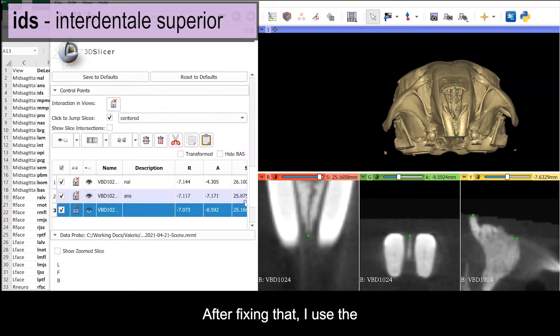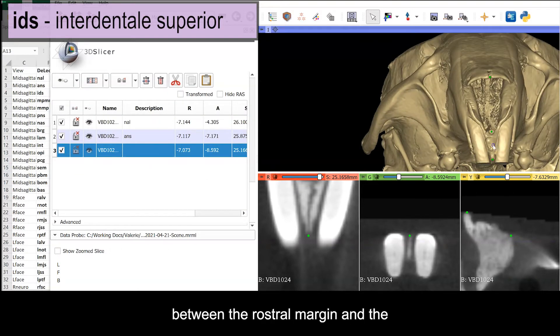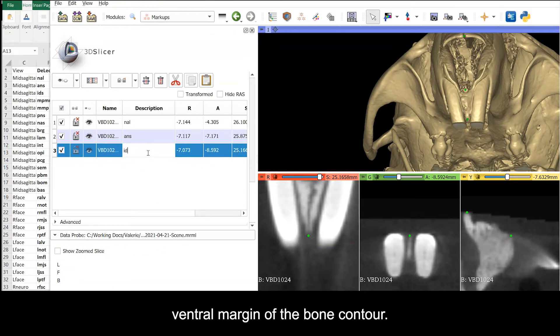After fixing that, I use the sagittal view to confirm the point is at the maximum of curvature between the rostral margin and the ventral margin of the bone contour.